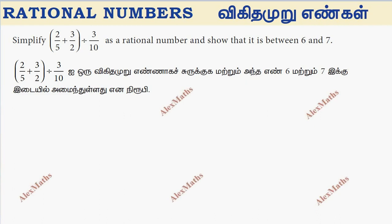Hi students, this is Alex here. Simplify as a rational number so that it is between 6 and 7. We will simplify the first bracket number.